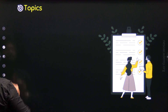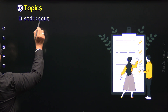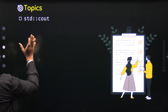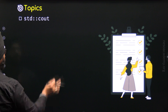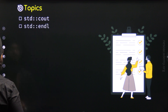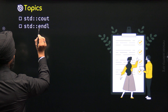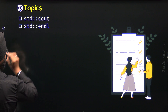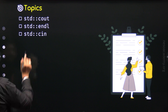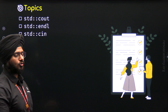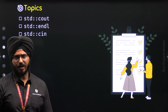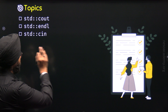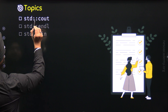The first topic of this lecture is STD Cout. We will understand what STD Cout is in C++ and how we can use it. Then we will move to the next topic, STD endl. After that, we will cover the last topic, STD Cin. So there are a total of three topics in this lecture. Let's get started with the first topic, STD Cout.